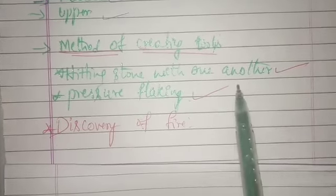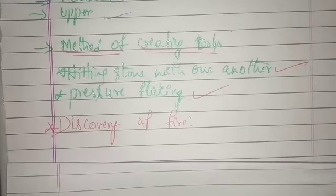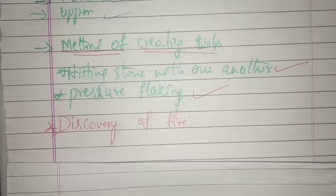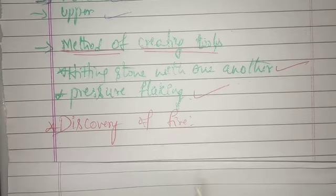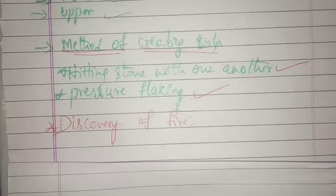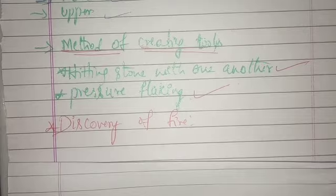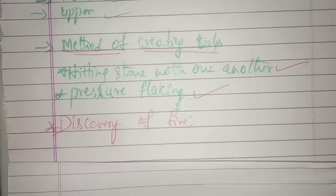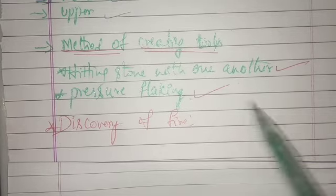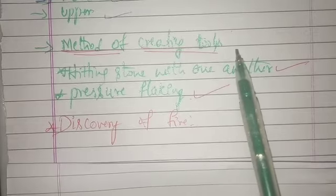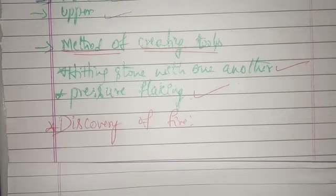So one method of creating tools we got to know is hitting one stone with another — having two stones and rubbing each other until it gets the desired shape. The second method is pressure flaking. Another way of making stone tools was pressure flaking.